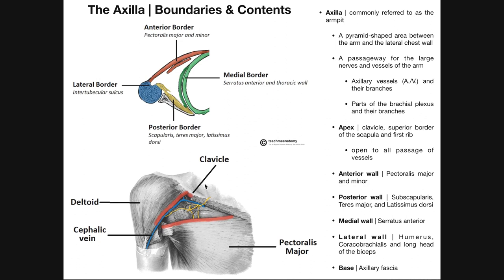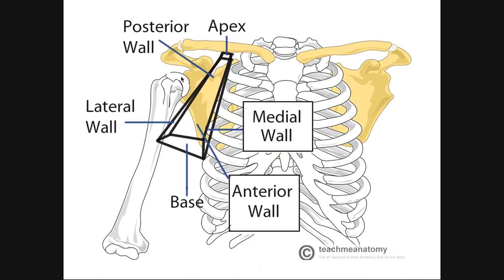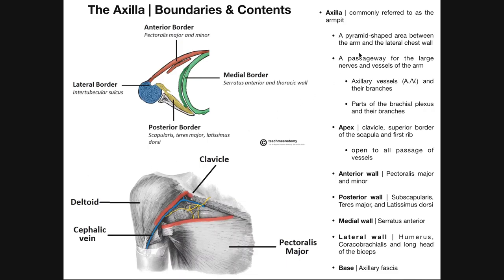So first of all, what is the axilla? It's pretty much just the armpit, and scientifically speaking, it's a pyramid-shaped area between the arm and the lateral chest wall. Looking at this picture, we can see that pyramid — up near the top at the apex, near the inferior surface of the clavicle, it's very small. But as it gets toward about a third of the way down the humerus and its intersection with the thoracic wall, it broadens a lot to its base. This pyramid is a space for nerves and blood vessels to travel as they go down toward the arm, serving as a passageway for the large nerves and vessels of the arms.